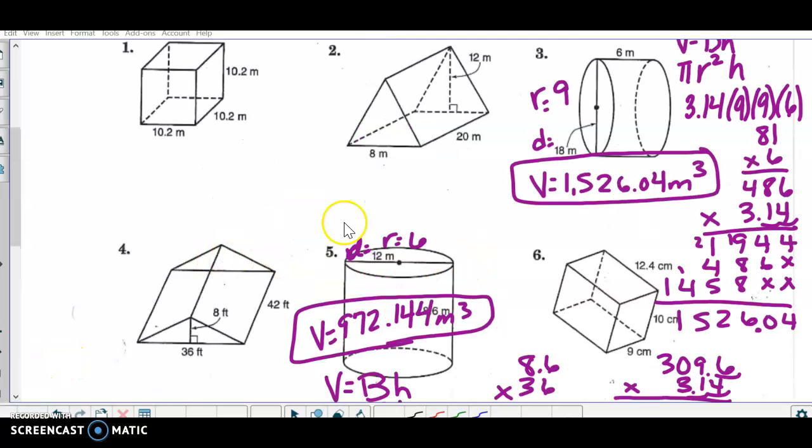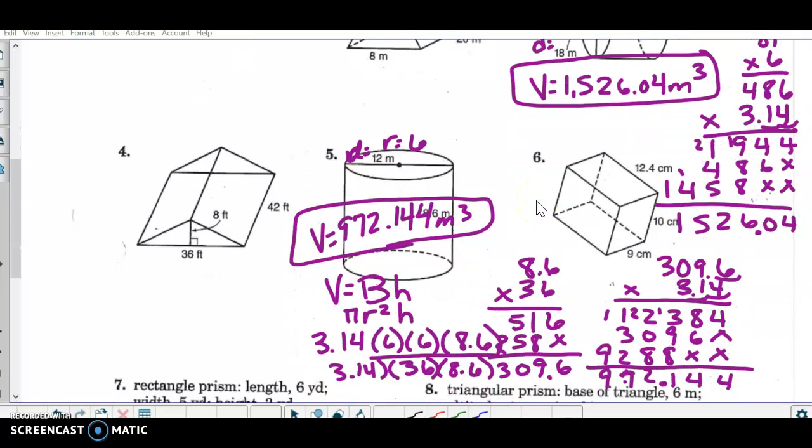Hopefully you got some answers for number three. So you can see we had set it up together. You should have gotten a volume of one thousand five hundred twenty six point zero four meters cubed. And number five, nine hundred and seventy two point one four four meters cubed. And I have a practice activity for you to do, and then there are some check for understanding questions.